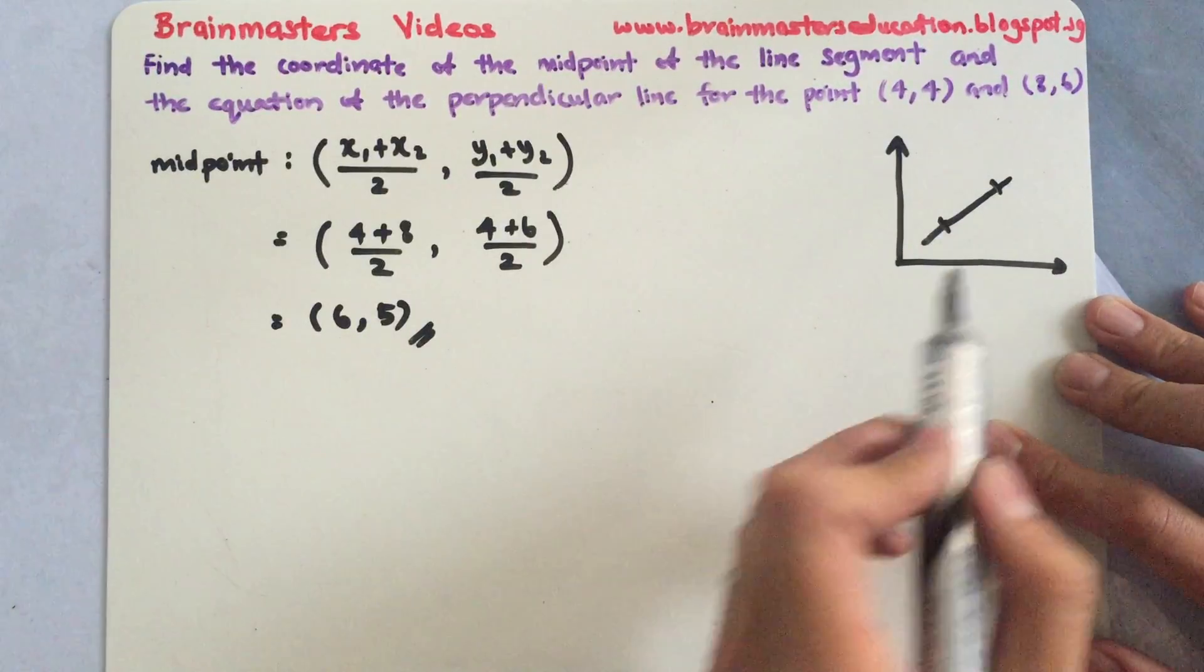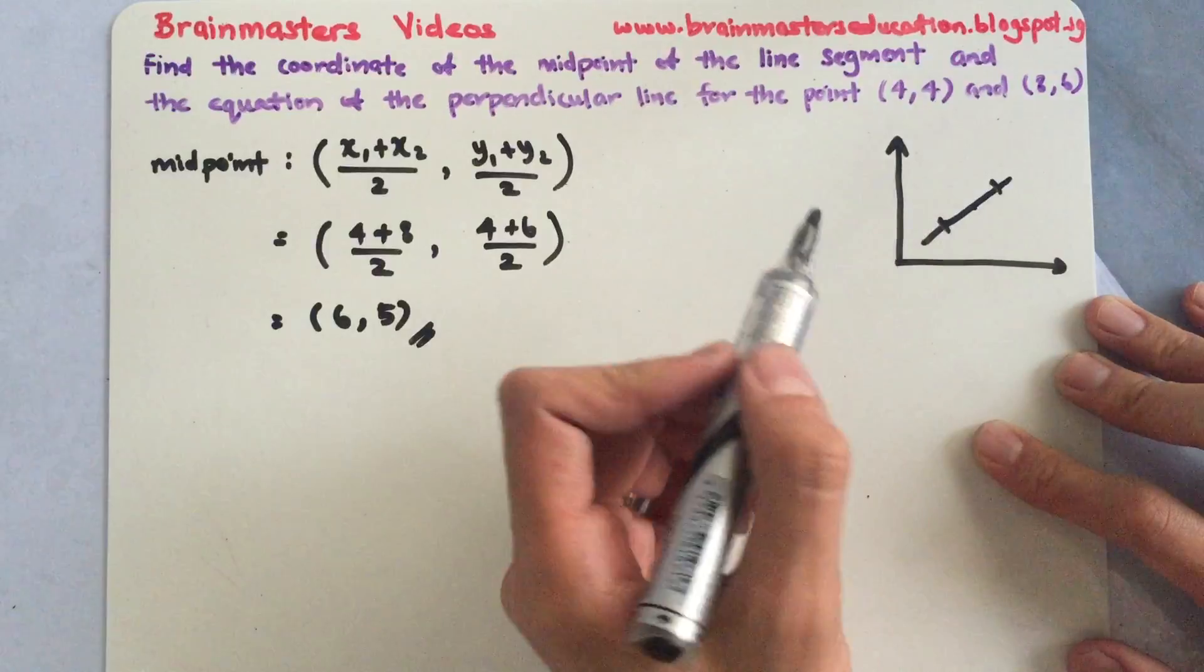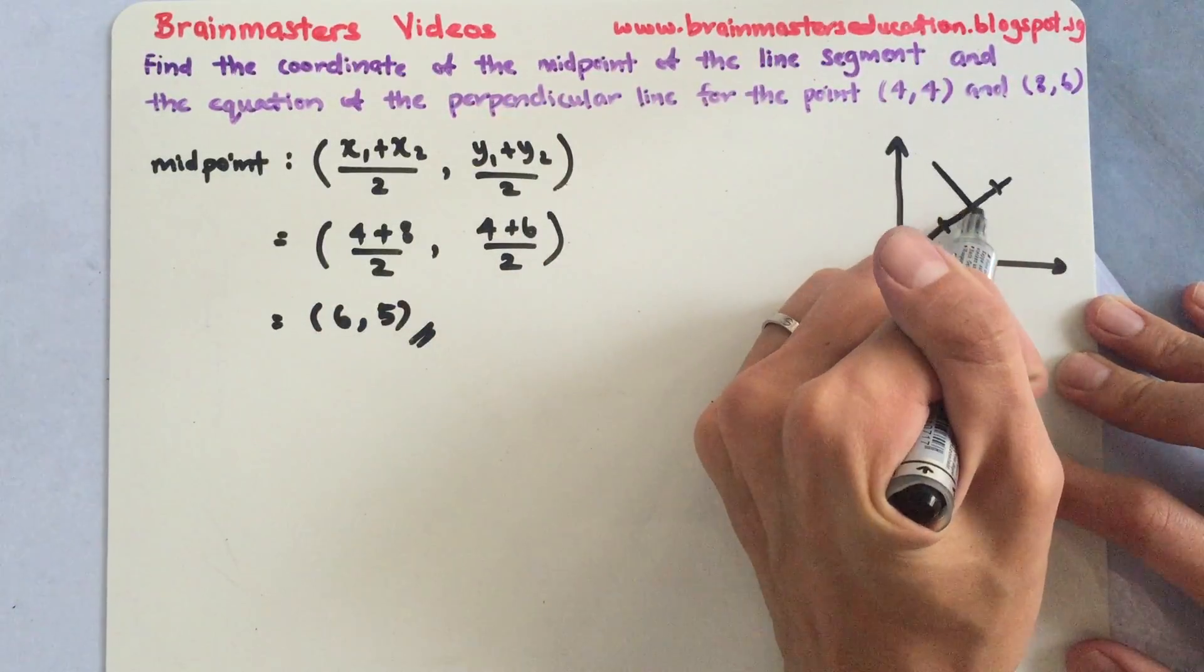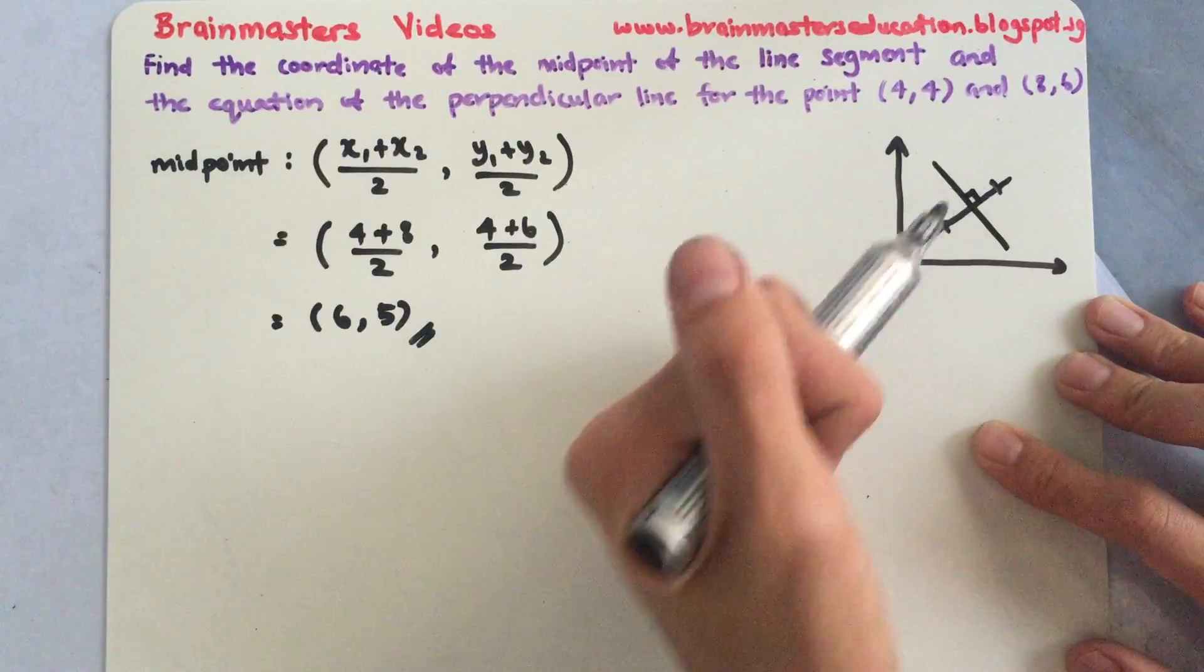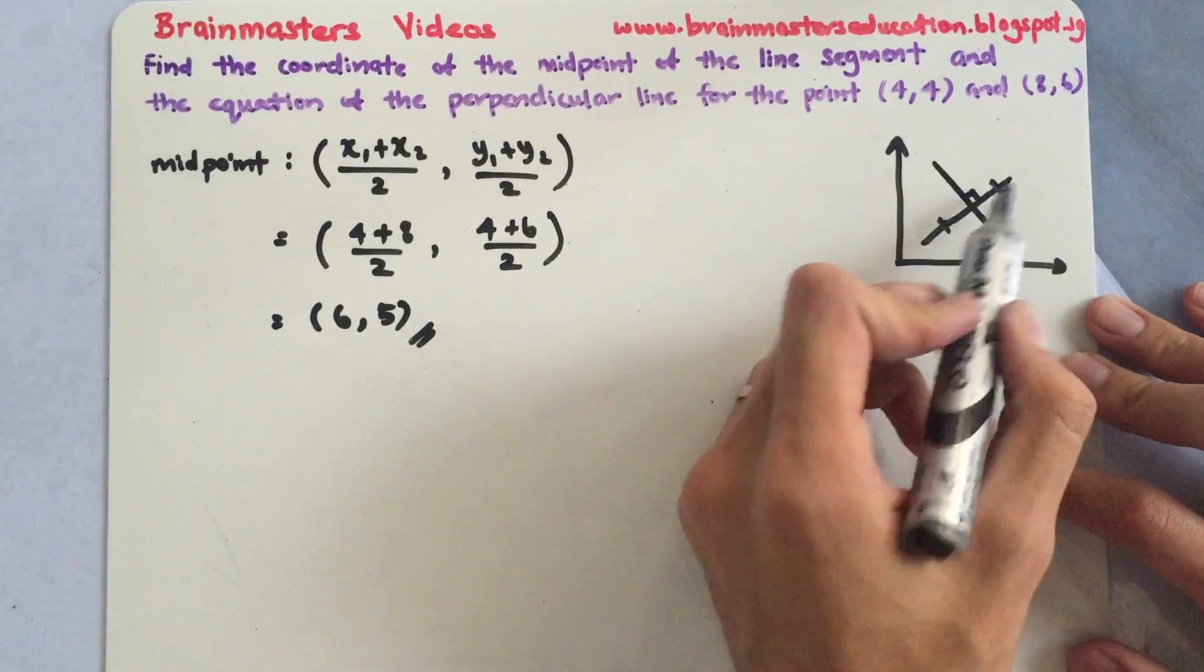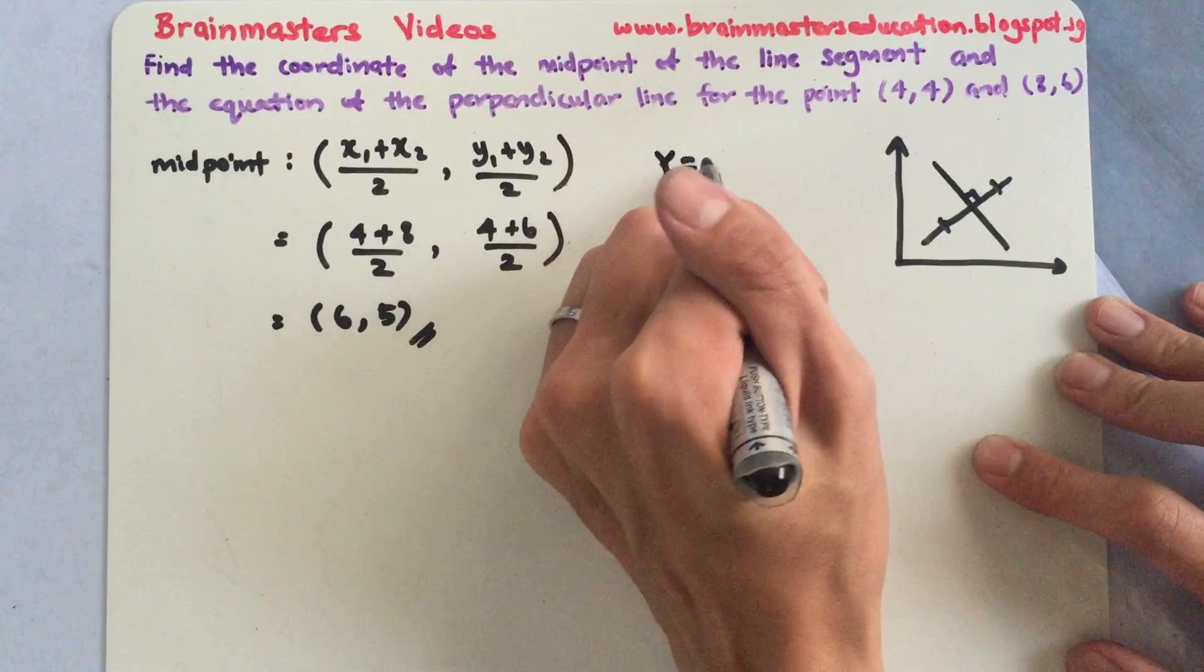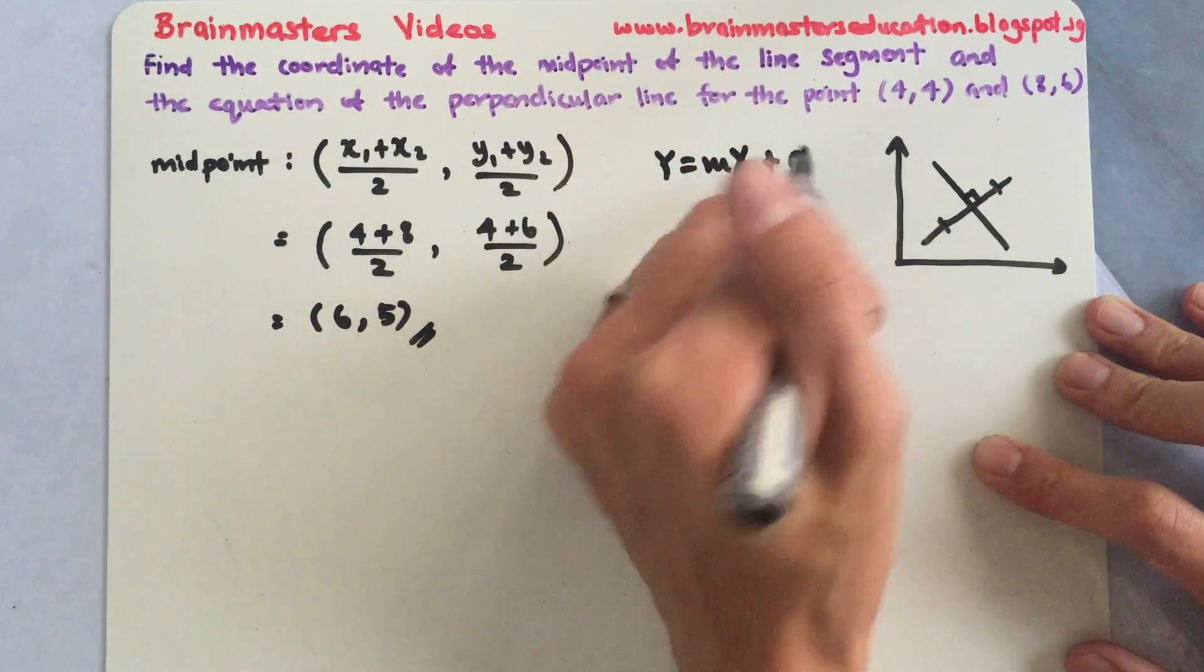So the midpoint is actually (6,5). So this is my midpoint. And they want a perpendicular line. So how it looks like, it will cut here at 90 degrees. So first, if I want to find the equation, I know the equation of the line is always y equals mx plus c because it's a straight line.